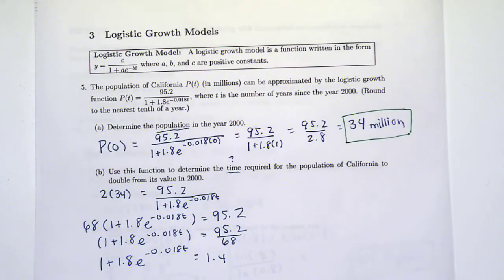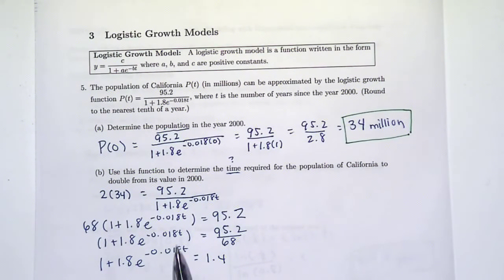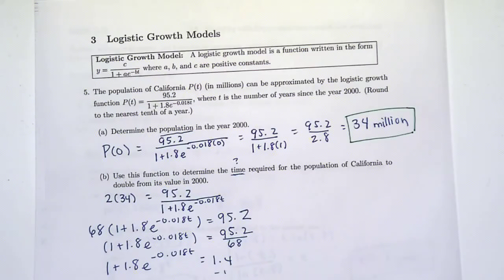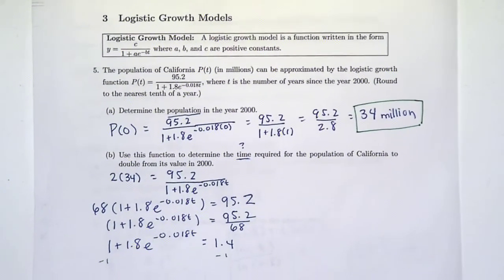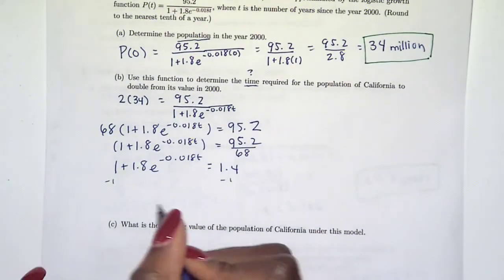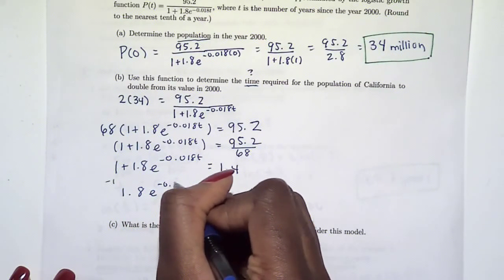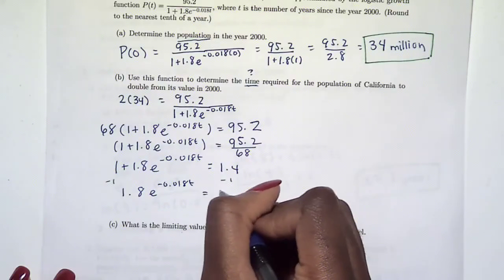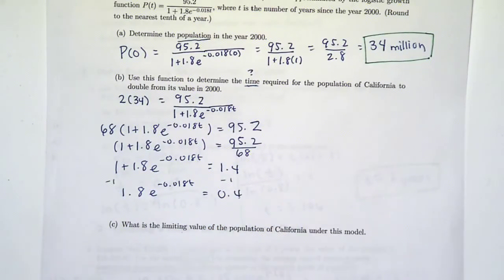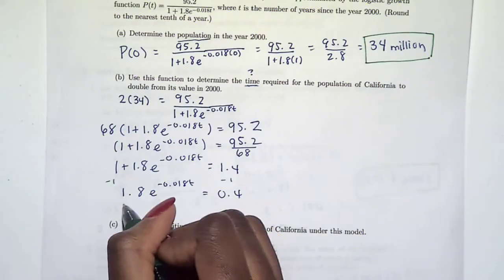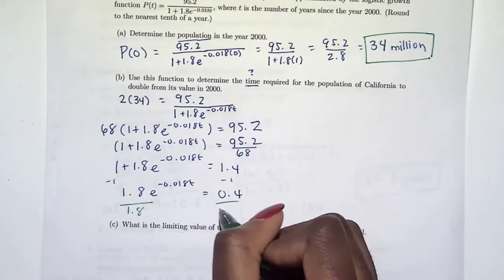Then I'm going to divide by this 1.8. Is this one nice? 0.4 divided by 1.8, no it's not nice, so I'm not going to use this rounded decimal. I'm going to leave it as the fraction.